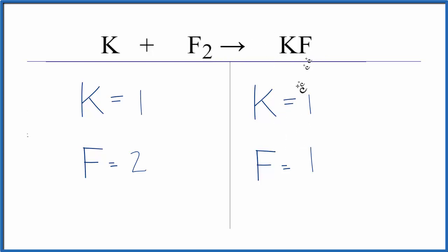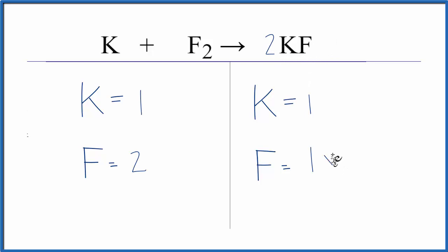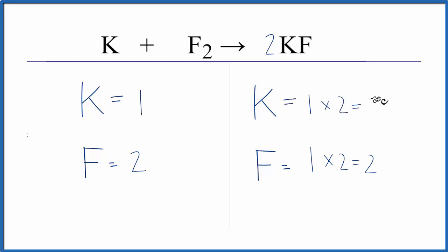So to get two fluorine atoms like I have over here, I can change the coefficient to a two. This two applies to every atom here, so it applies to the K and to the F. So I have one F times two, and that'll give me two fluorines. Those are balanced, but the two applies to everything, so we have one times two for the potassium, and now we have two of those.